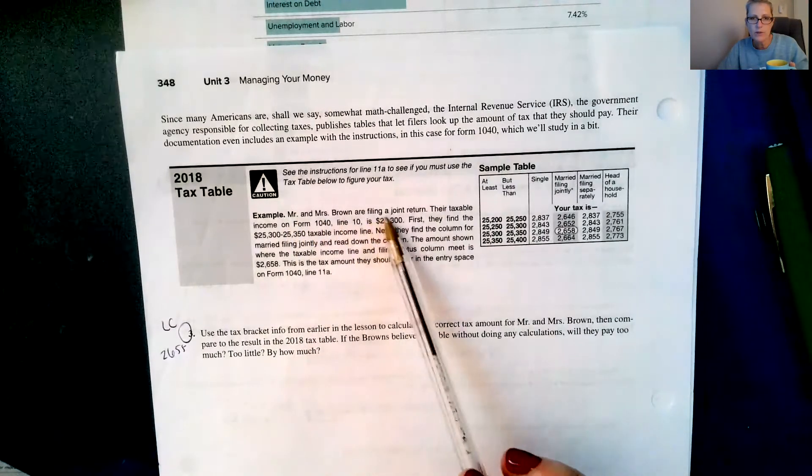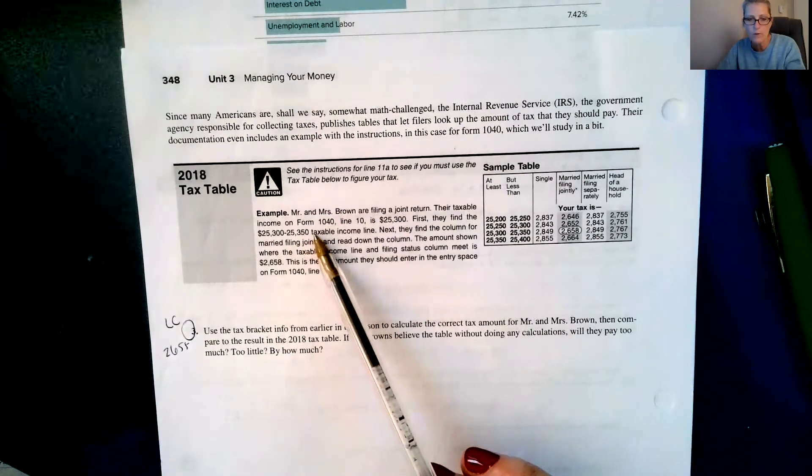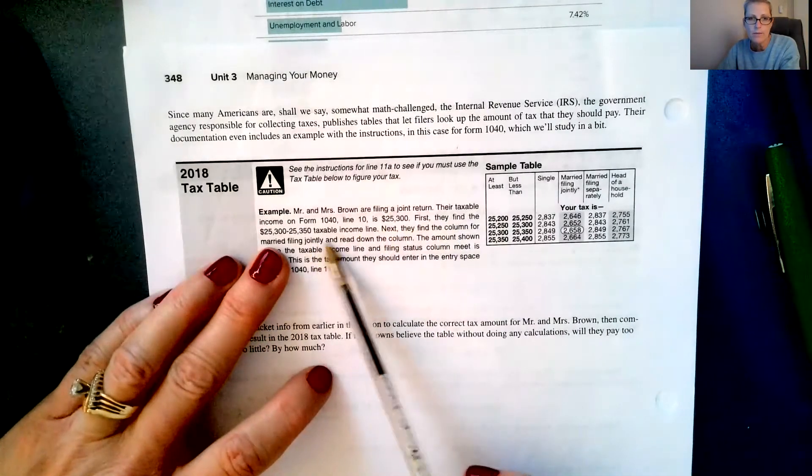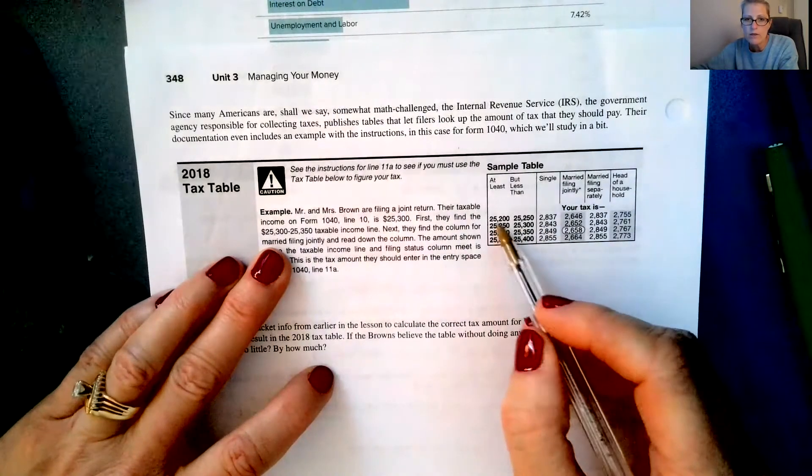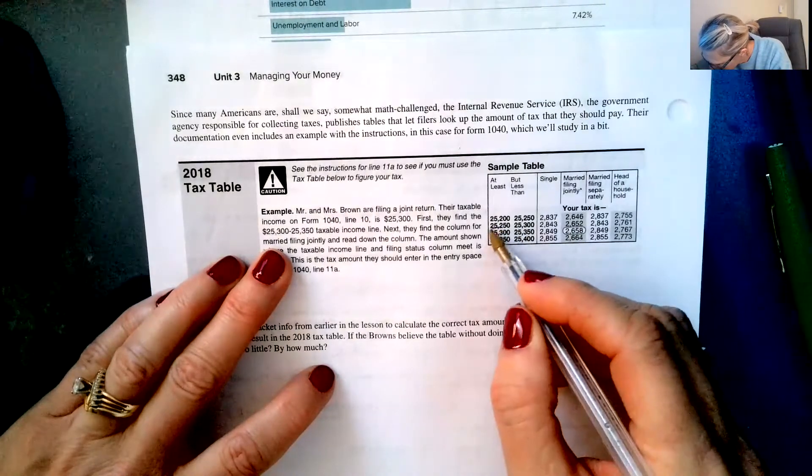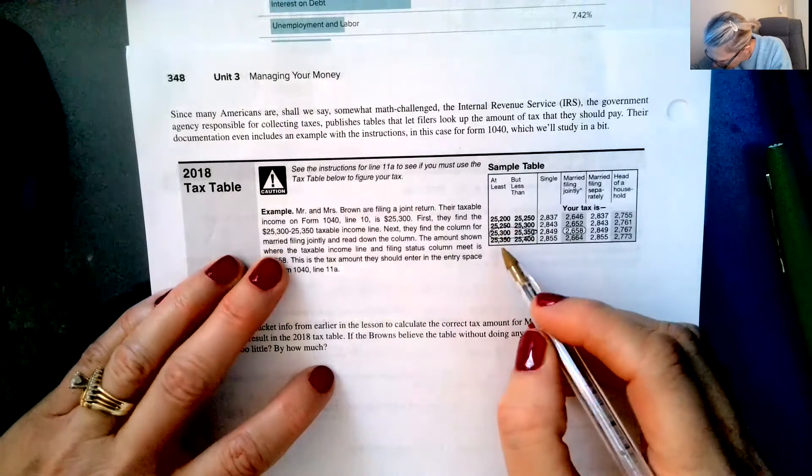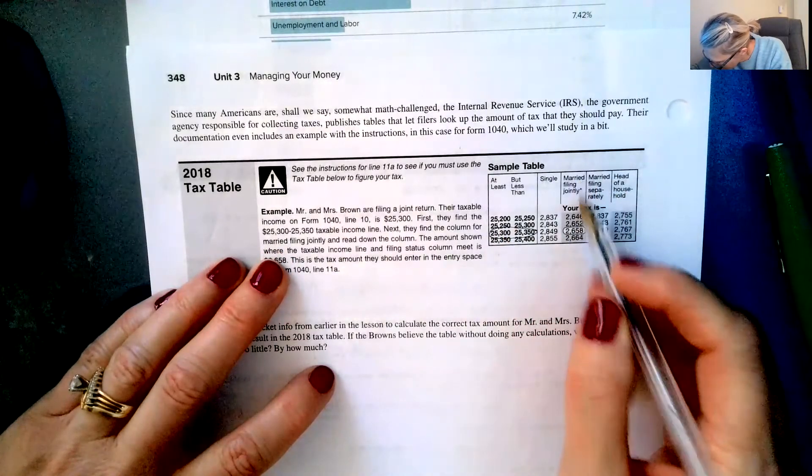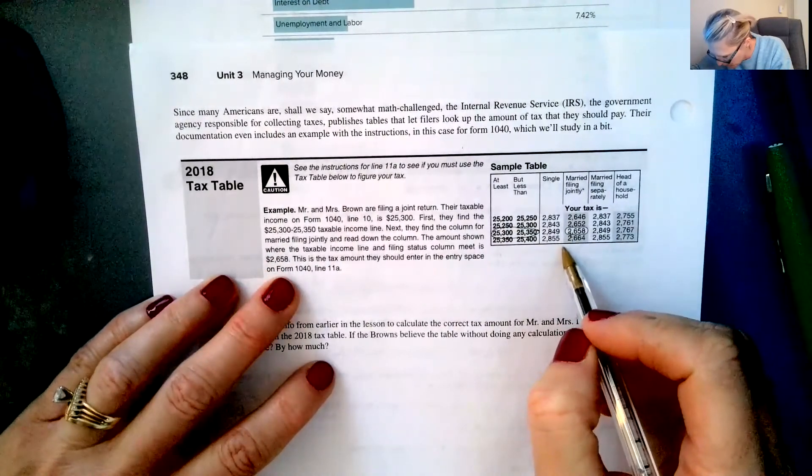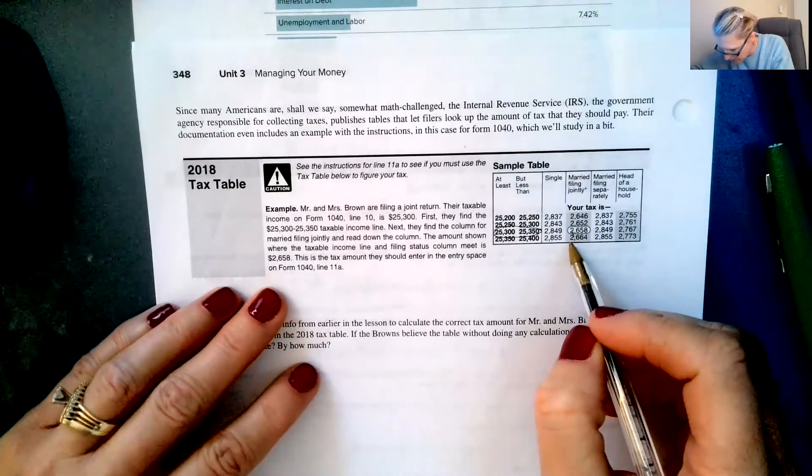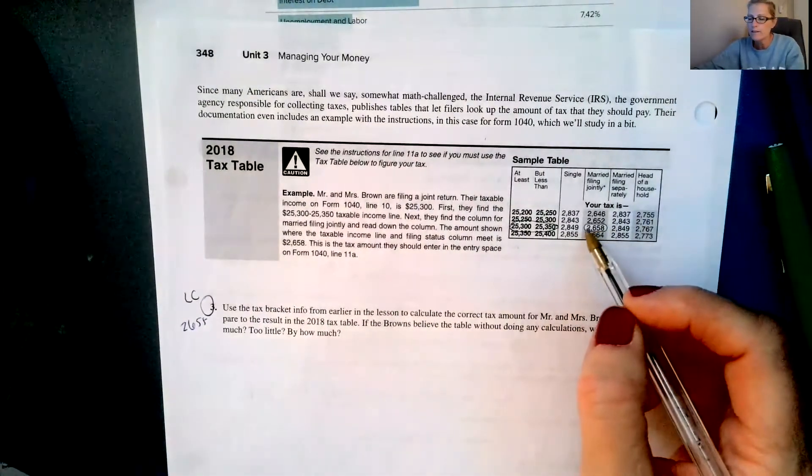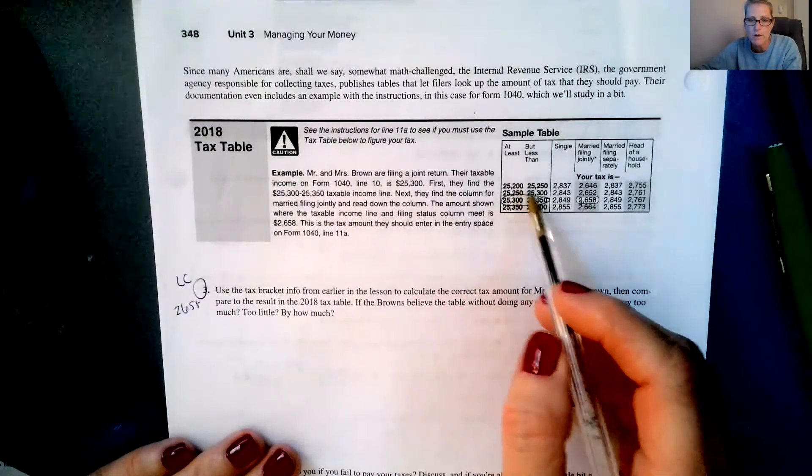So it says Mr. and Mrs. Brown are filing a joint return. Their tax table income on the form 1040, line 10, is $25,300. First, they find their taxable income line, which is $25,300, so it's this one right here. Next, they find a column for married filing jointly, right here. The amount shown where the taxable income line and filing status column meet is $2,658. This is the tax amount they should enter in the entry space on form 1040, 11a. So it kind of makes it an easy way to find your tax amount that you're going to pay because they kind of break it down by small categories.